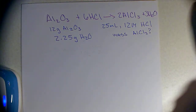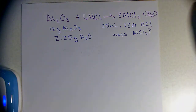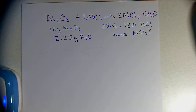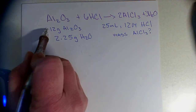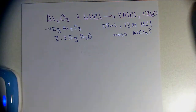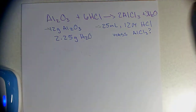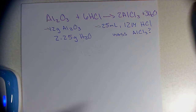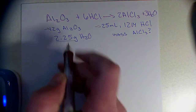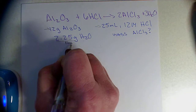I really like this question because it pretty much has us doing everything — moles, molarity, everything. The question gives us 12 grams of Al₂O₃ and 25 milliliters of 12 molar HCl reacted together, and we formed 2.25 grams of water.